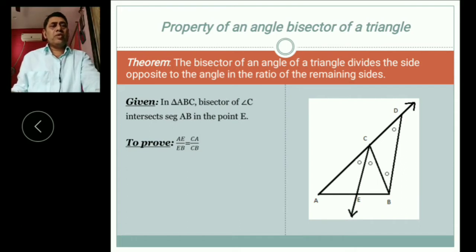Now what is proof? Here I write a given in theorem, that is side opposite the angle in the ratio of the remaining sides.